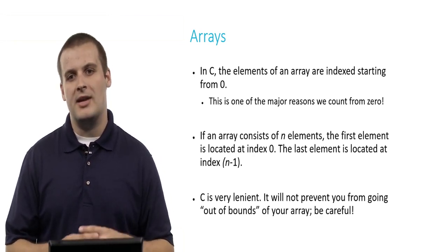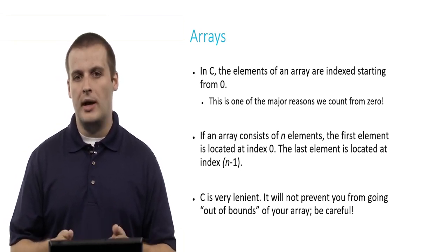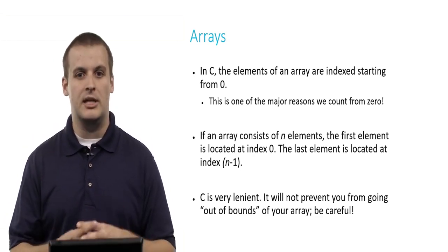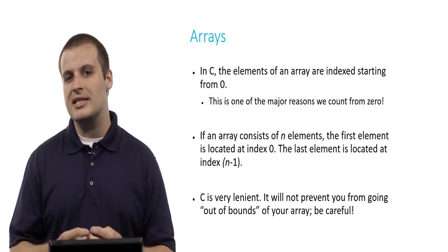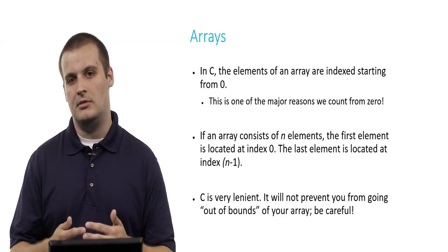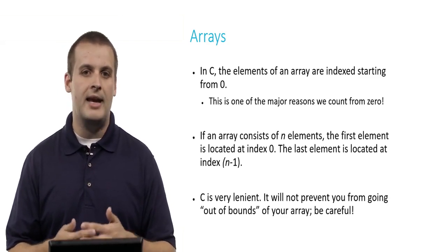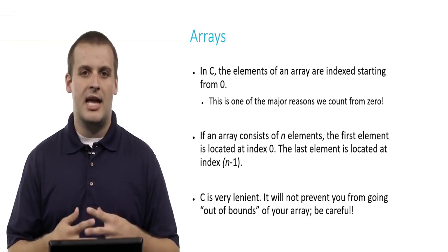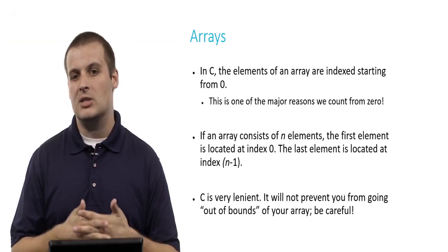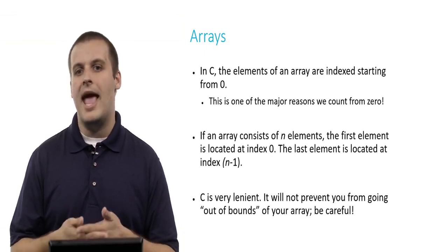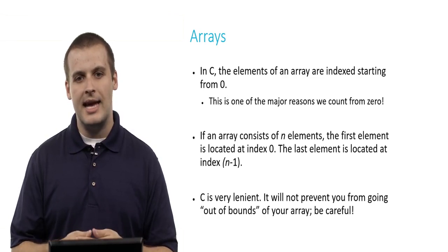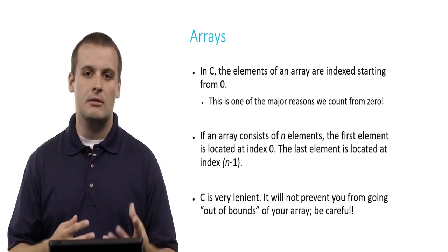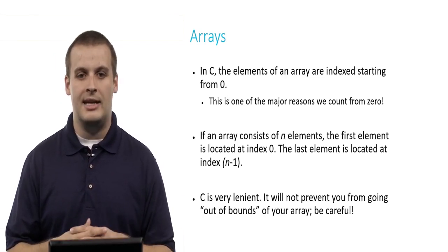In C, the elements of an array are indexed starting from 0, not from 1, and this is really important. This is why in CS50, and why computer scientists frequently count from 0 — it's because of C's array indexing, which always starts at 0. So if an array consists of n elements, the first element is at index 0, and the last element is at index n minus 1. If our array has 50 elements, the first element is at index 0 and the last is at index 49.